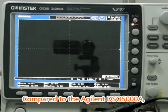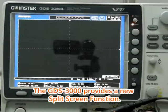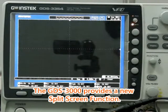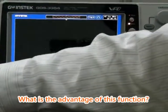Compared to the Agilent DS-05000A, the GDS-3000 provides a new split screen function. What is the advantage of this function?